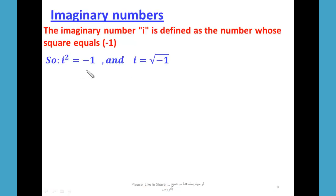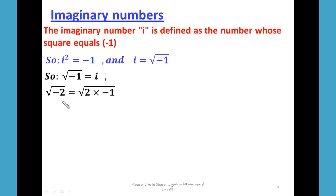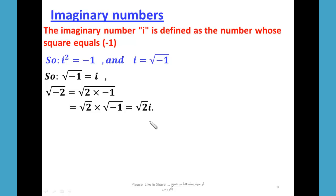i² = -1. Now we have an imaginary number to represent √(-1): √(-1) = i. Here we have a new set — it is the set of complex numbers. So √(-1) = i. And √(-2) = √(2 × -1) = √(-1) × √2 = √2·i. So √(-2) = √2·i.